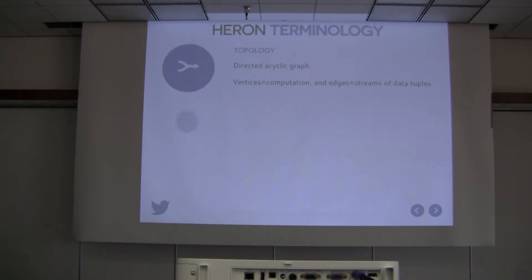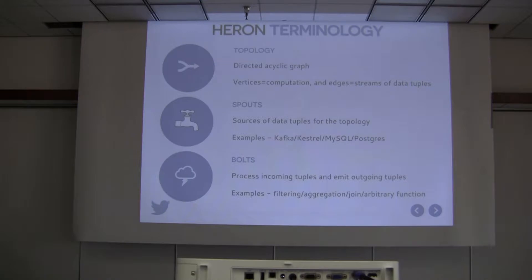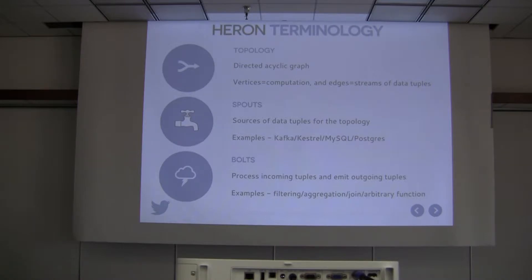To give some Heron terminology: a streaming Heron job is called a topology, very similar to Storm. We wanted to be backward compatible with Storm, so the terminology matches. A topology is essentially a DAG with two different types of vertices. One type is called spouts, which represent data sources — you can tap into Kafka, Kestrel, MySQL, Postgres, or other databases.